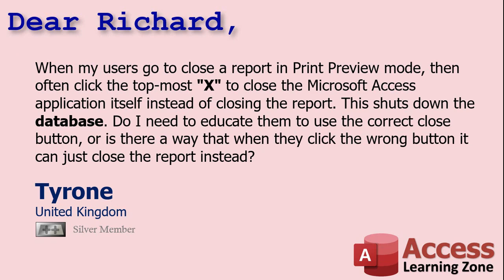This one has actually been on my list for a while, but today in my forums on the website, Tyrone from the UK, one of my silver members, posted this question. Tyrone says when his users go to close a report in print preview mode, they click on the topmost X all the way up on the right to close Microsoft Access itself instead of closing the report. This shuts down the database. He asks: do I need to educate them, or is there a way that when they click the wrong button it can just close the report instead?